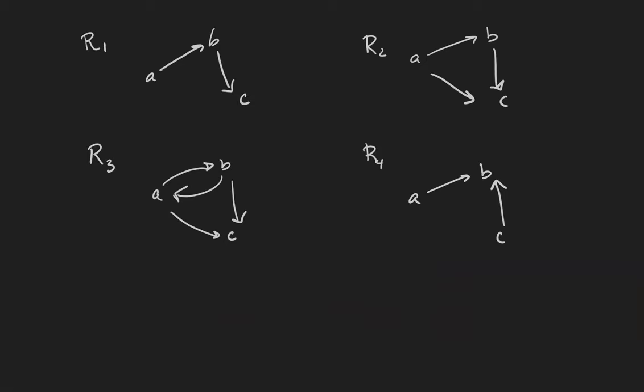Here's an example of four different relations on the set ABC. The first is the relation that takes A to B and B to C. This relation is not transitive because it is missing the edge from A to C. For that same reason, R2 is transitive because we can get from A to B and from B to C, so therefore we should have A related to C.